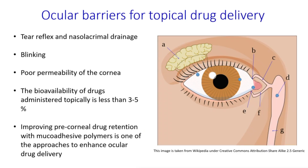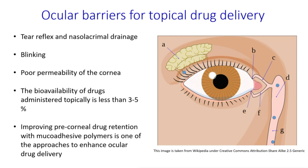Our eye is a very challenging target for drug delivery. This is related to several barriers that protect the eye from external factors. The surface of the eye is continuously irrigated with tear fluid, which drains through the lacrimal duct. The tear fluid is redistributed evenly on the surface of the eye through blinking.